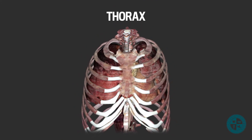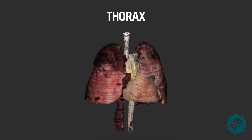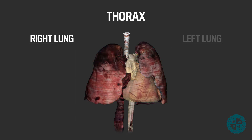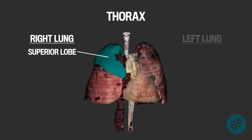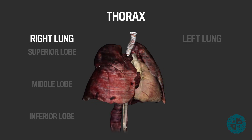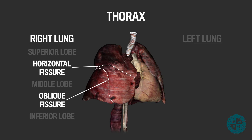Let's direct our attention to the thorax. In the thorax, we will find the two lungs on either side of the heart. Both lungs initially look very similar; however, there are some key differences between the right lung and the left lung. The right lung has three lobes: the superior lobe, the middle lobe, and the inferior lobe. Each of these lobes are separated by a fissure. Between the superior and middle lobe, we can find the horizontal fissure, and between the middle and inferior lobe, we can find the oblique fissure.